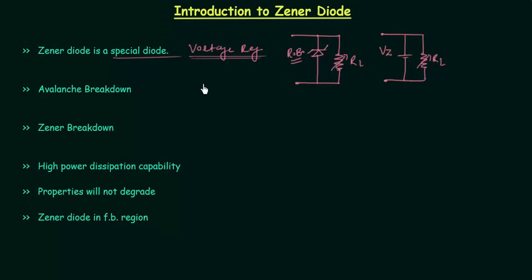Before moving to the equivalent circuits of Zener diode, I will explain two types of breakdown. The first one is avalanche breakdown and the second one is Zener breakdown. In case of avalanche breakdown, we apply a high reverse bias potential across the diode. The electrons gain high kinetic energy and break the covalent bonds, and they also free more electrons due to collisions, producing a chain reaction, and because of this a large current is produced.